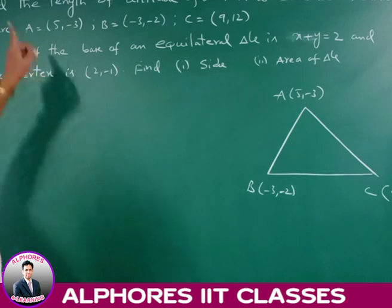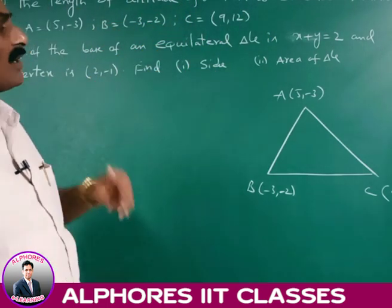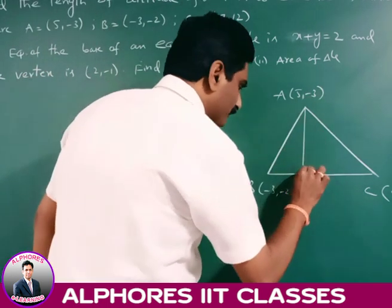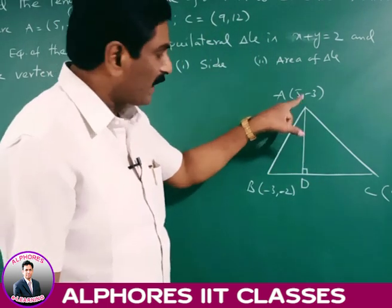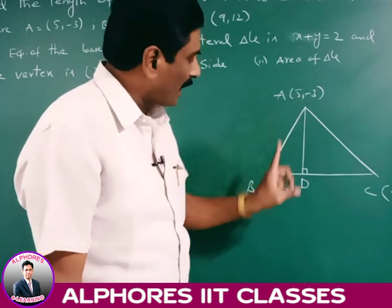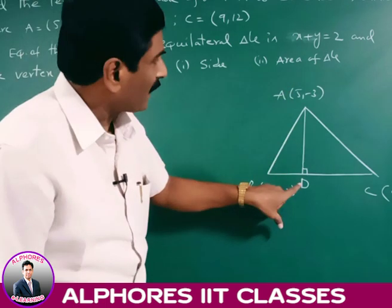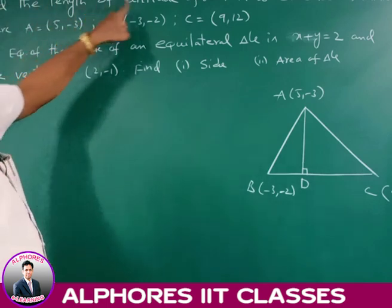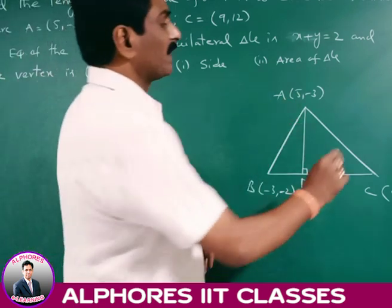In this case, the three vertices of a triangle are given. We find the length of the altitude from A to side BC. The length of the altitude is nothing but the perpendicular from vertex A to side BC. If D is the foot of the perpendicular from A to BC, then AD is the perpendicular distance from point A to side BC.